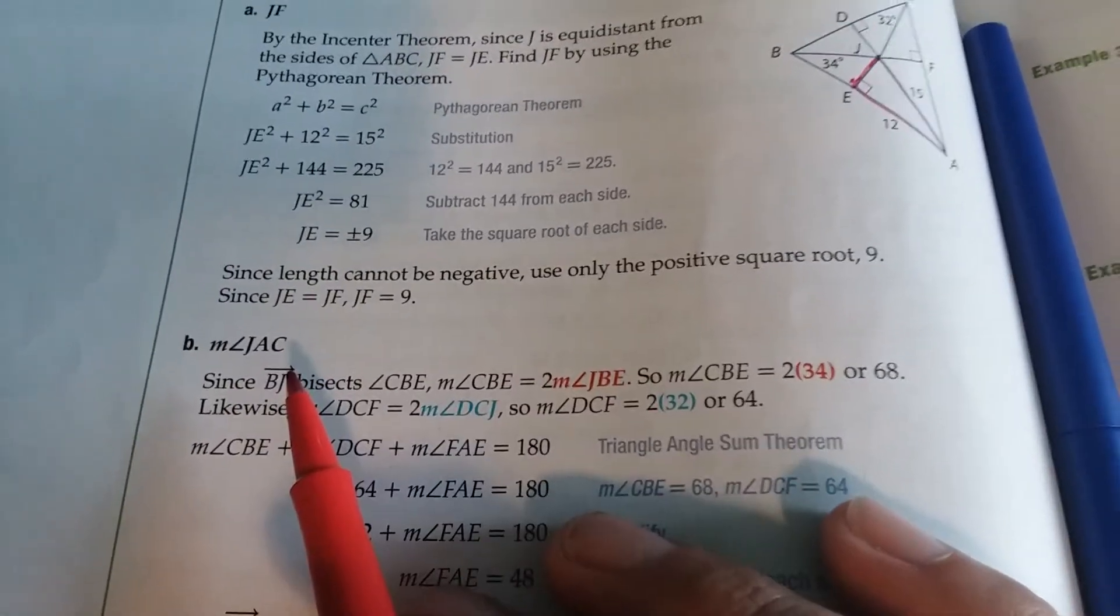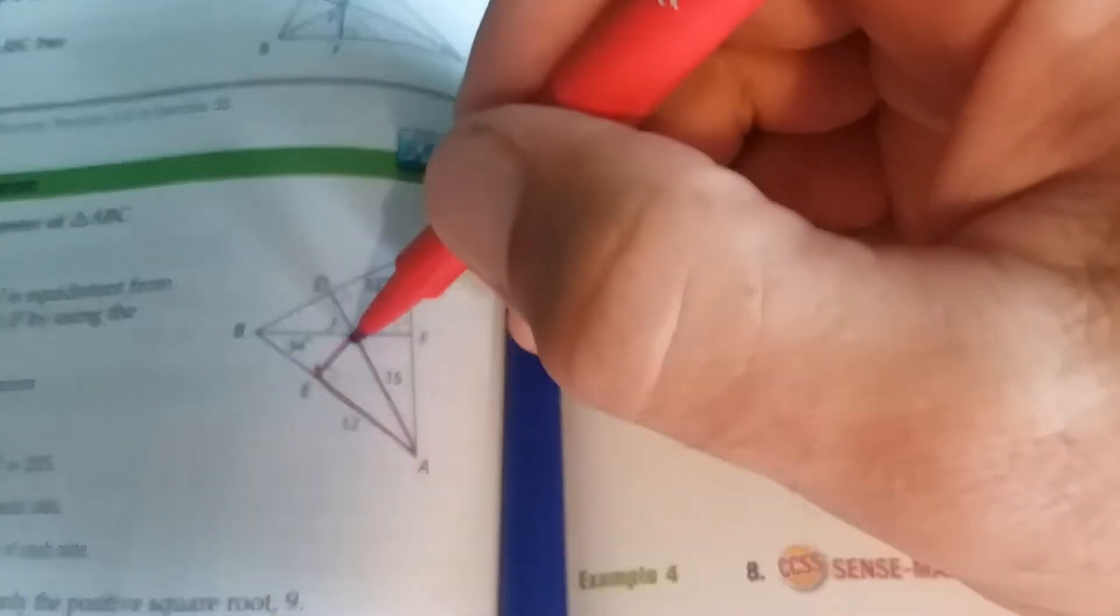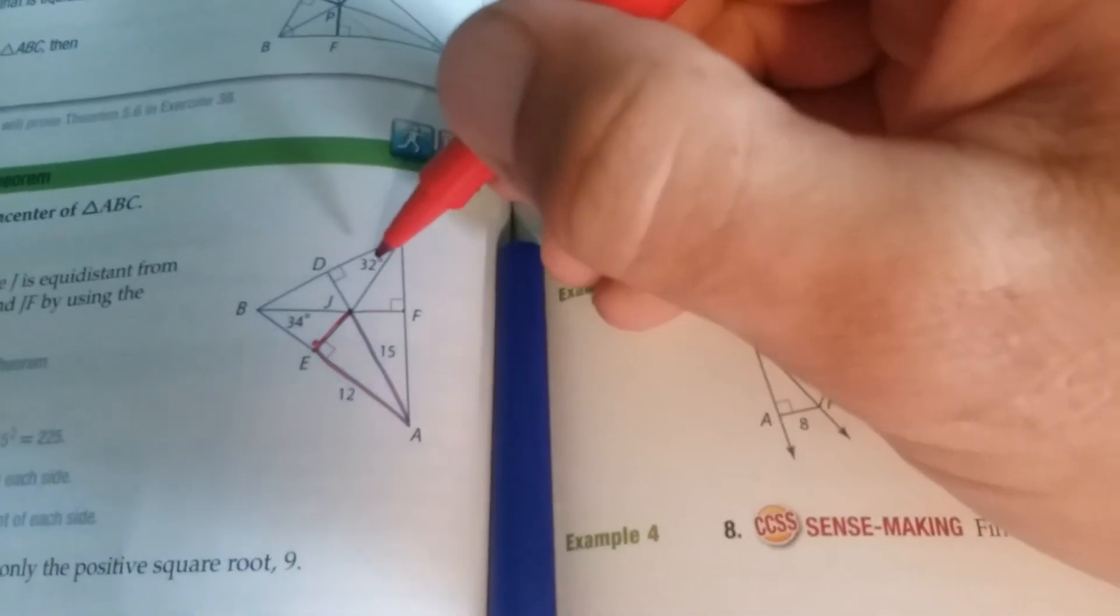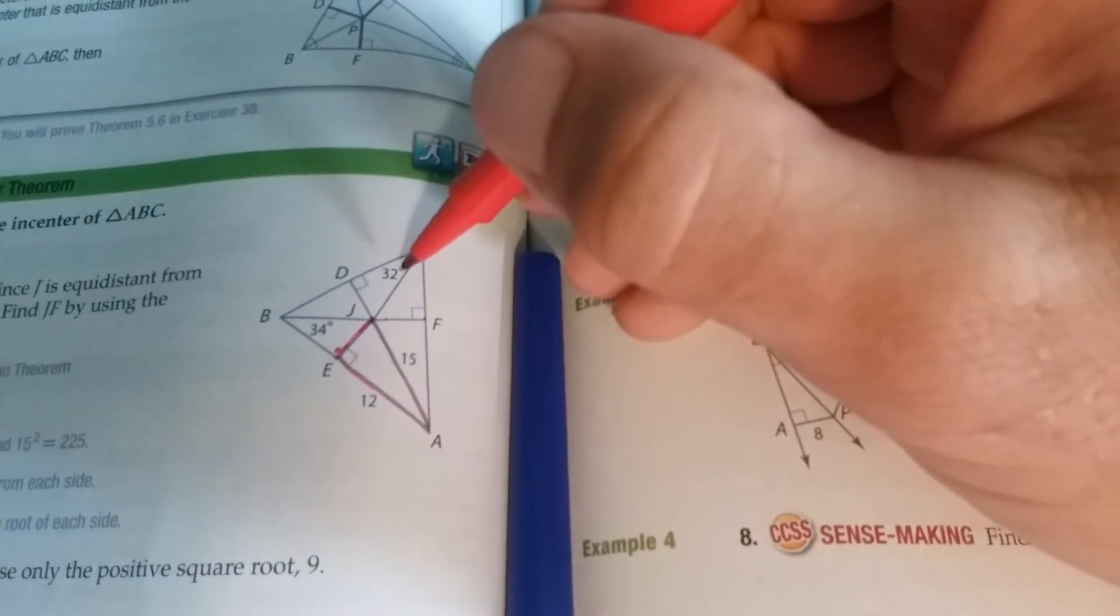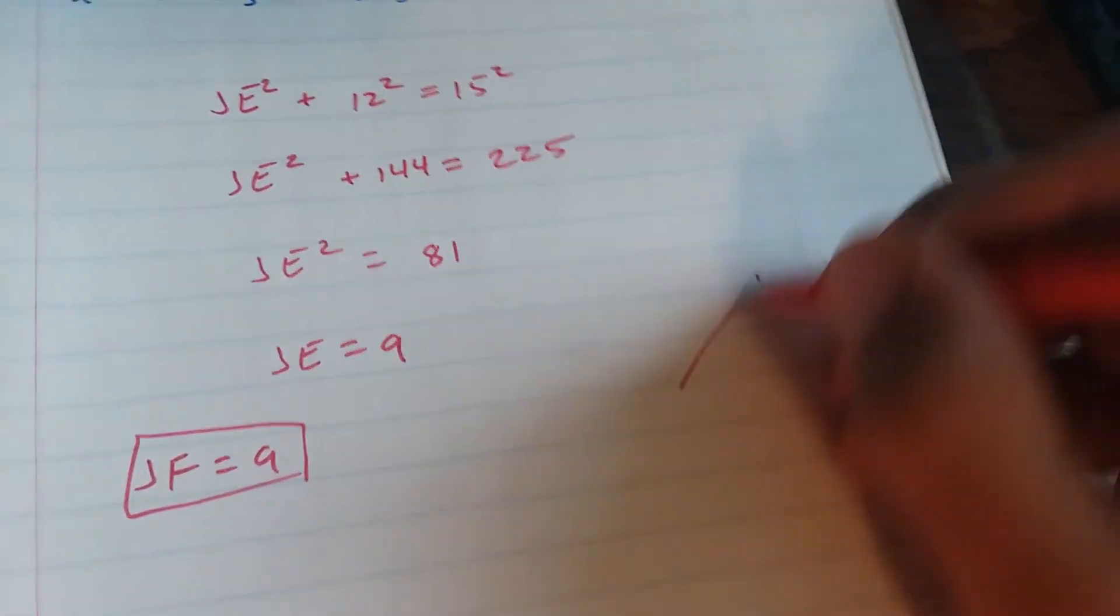And then part B here, find the measure of JAC. Well, if this is 32, we know this is also 32 right here and this is 34. So we have, I'm just gonna make a rough diagram.